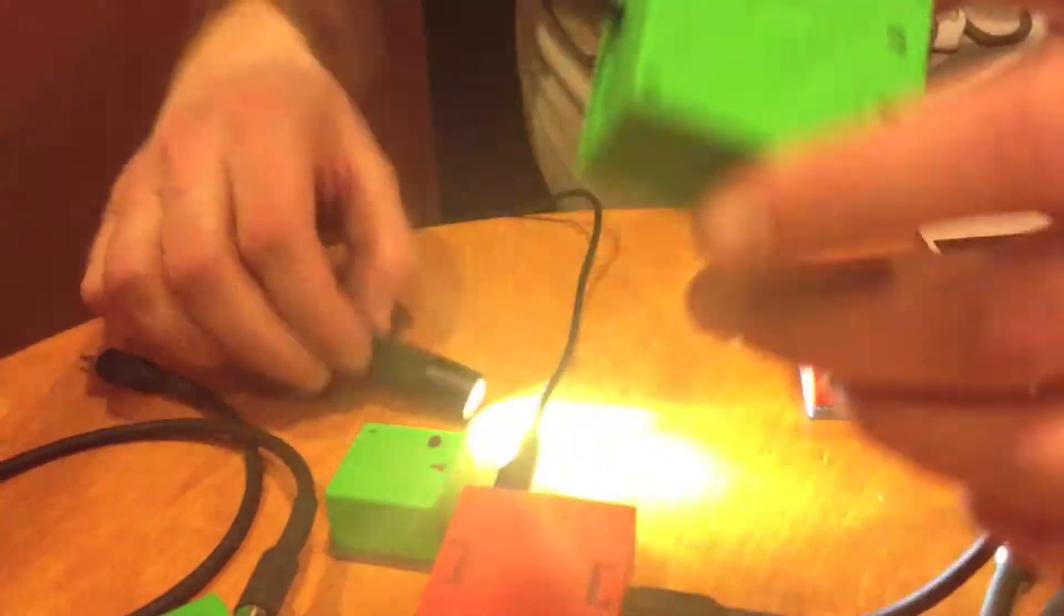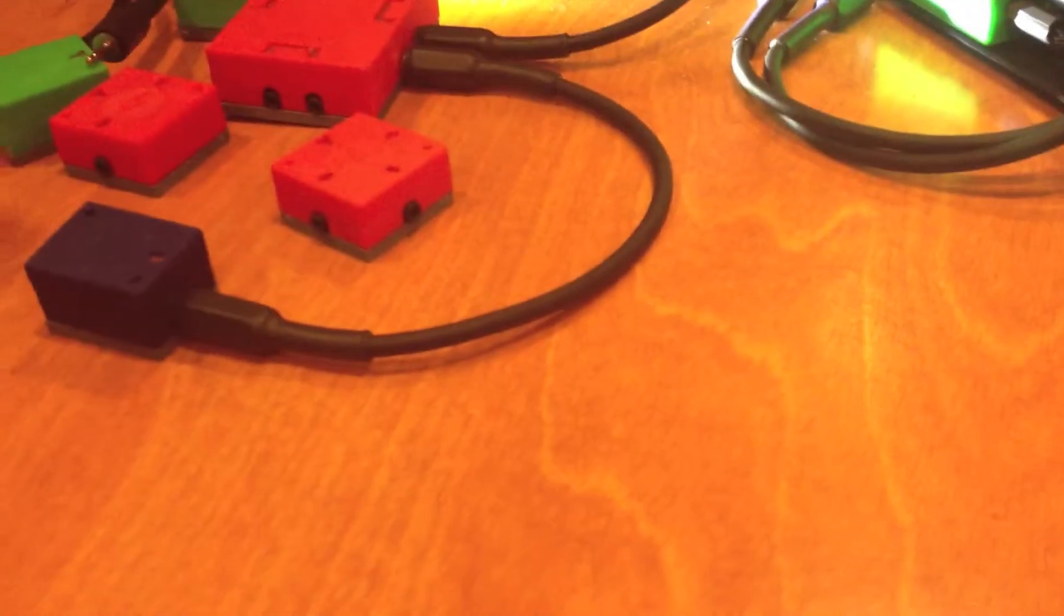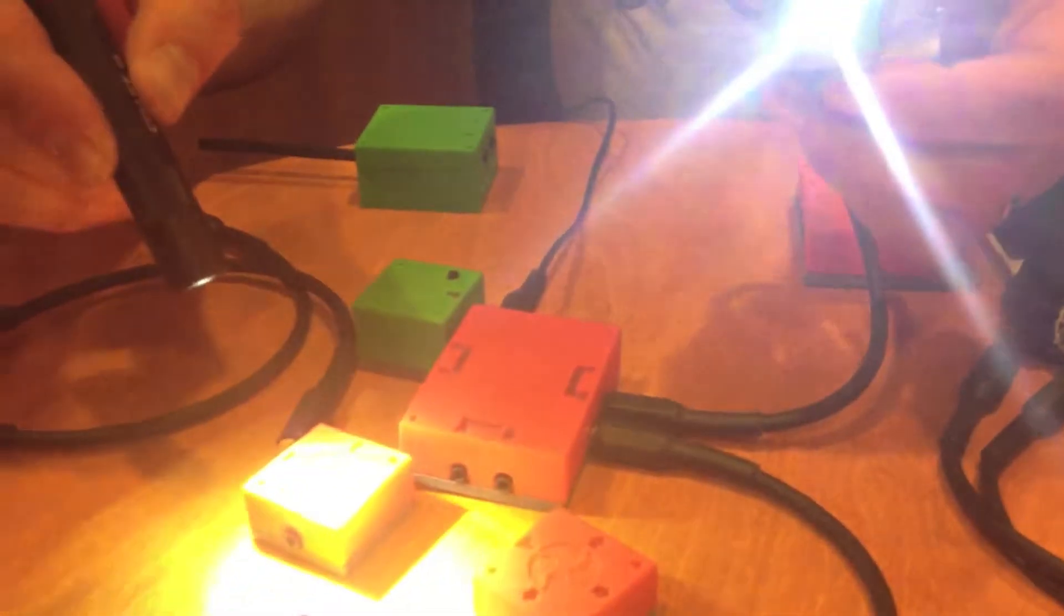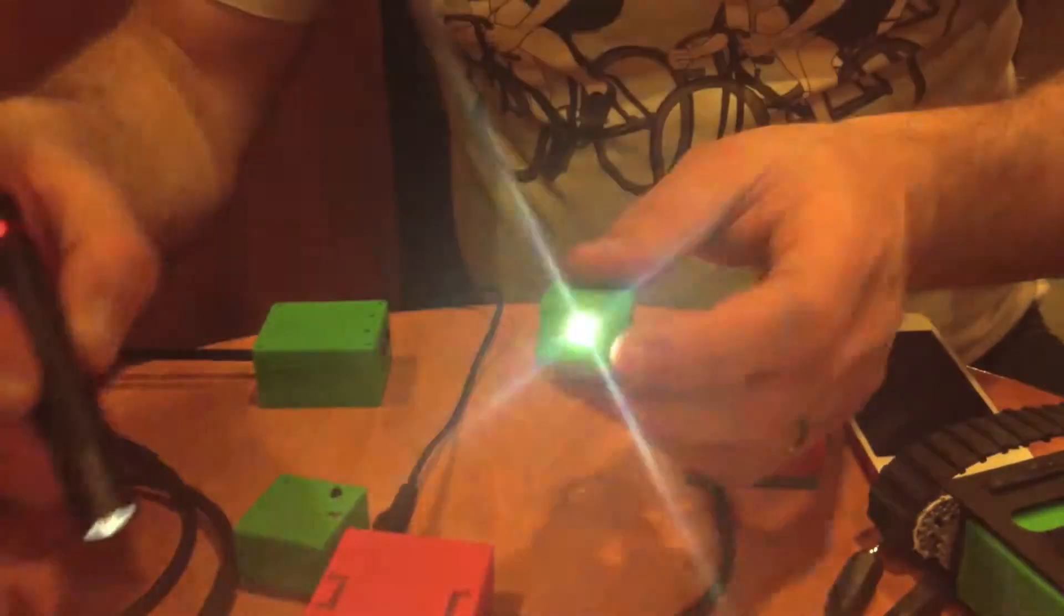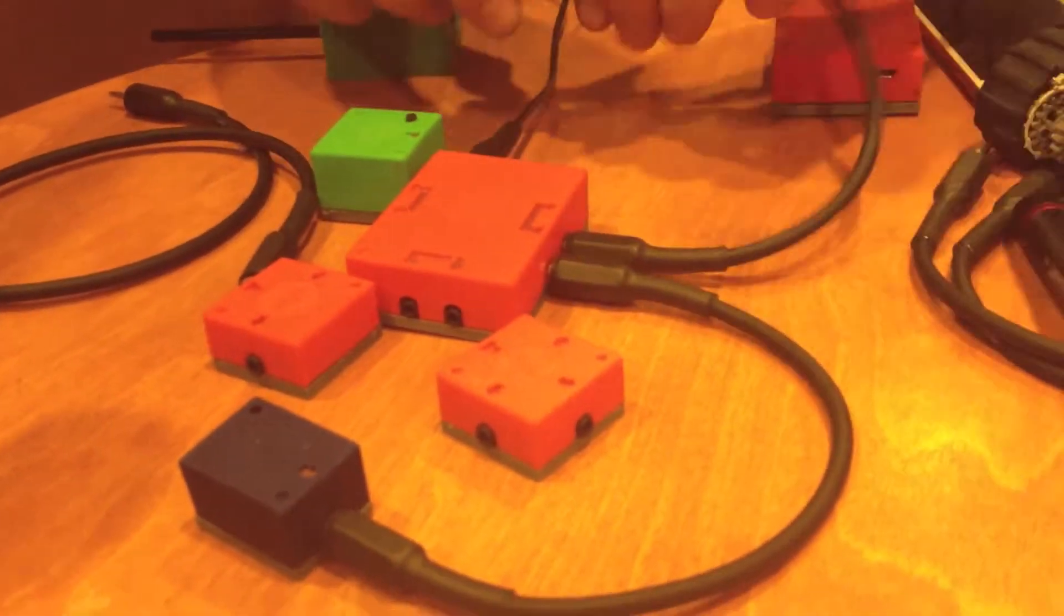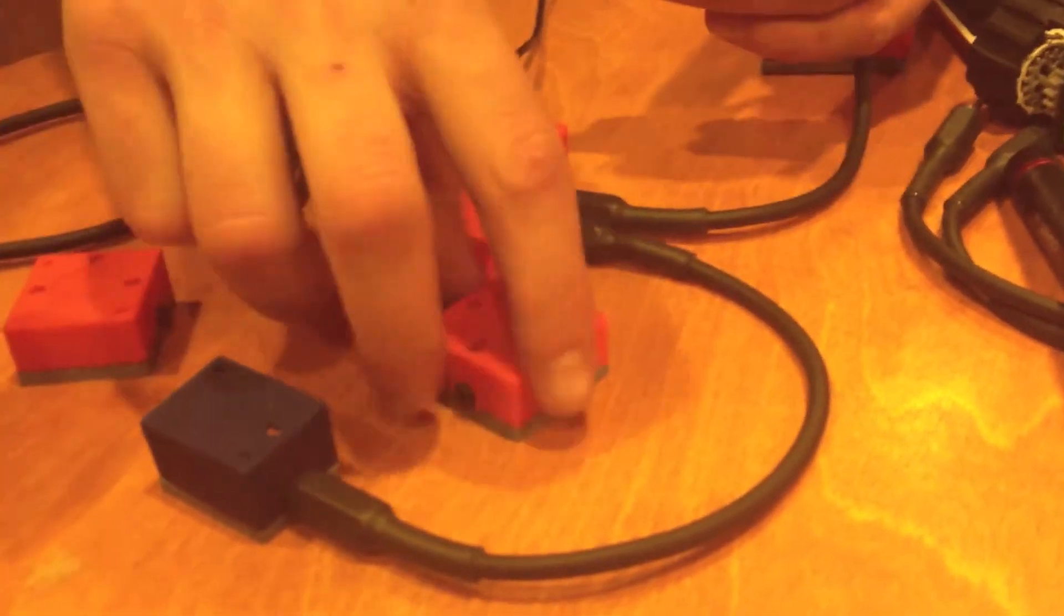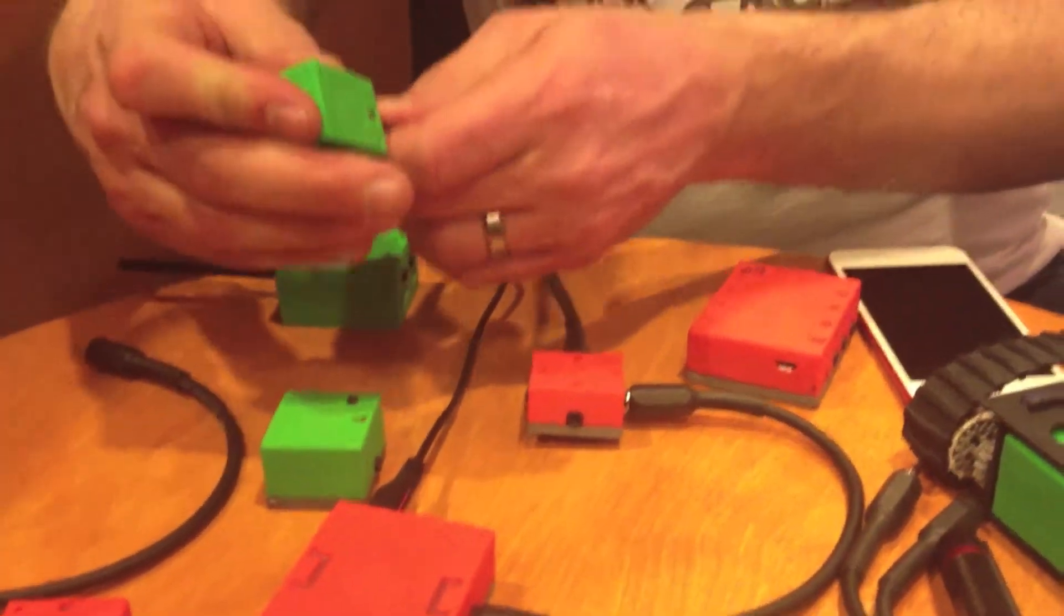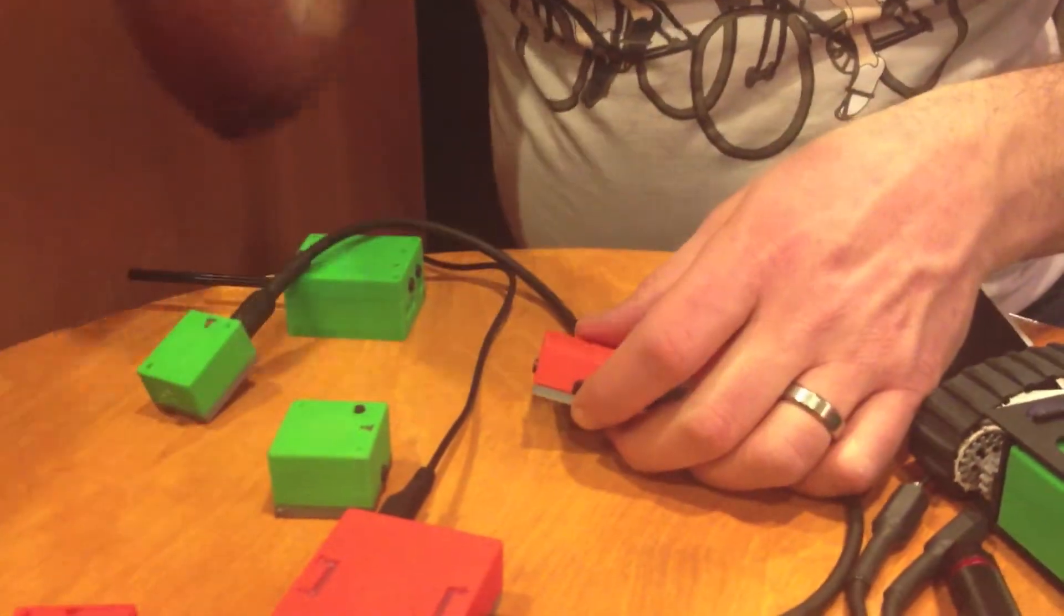And the same will be true for anything you plug into it. So if you have just the LED module plugged into it, then the more light I show to the light sensor, the brighter that gets. And if you want to do both, then you can plug this into the splitter. And you can have the LED module and the motor going at the same time.